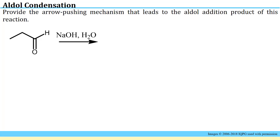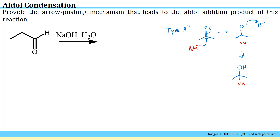Our first question asks us to provide an arrow-pushing mechanism that leads to the aldol addition product. The aldol addition is a reaction that we call type A in this primer, where you simply have a nucleophilic addition step shown here, and that pushes the minus charge up onto the oxygen. Generally the second step is simply protonation to lead to the formation of an alcohol.